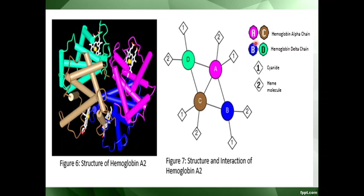In the structure of hemoglobin A2, chains A and C (shown in pink and brown) are the alpha chains, while chains B and D are the delta chains. It contains four ferrocyanide groups — one per chain — and each chain also contains one heme molecule attached to it.